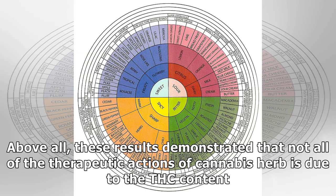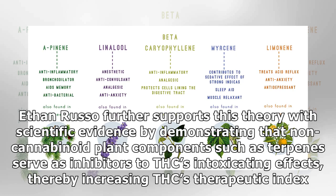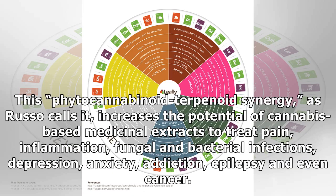These results demonstrated that not all of the therapeutic actions of cannabis herb are due to THC content. Ethan Russo further supports this theory with scientific evidence, demonstrating that non-cannabinoid plant components such as terpenes serve as inhibitors to THC's intoxicating effects, thereby increasing THC's therapeutic index. This phytocannabinoid-terpenoid synergy, as Russo calls it, increases the potential of cannabis-based medicinal extracts to treat pain, inflammation, fungal and bacterial infections, depression, anxiety, addiction, epilepsy, and even cancer.